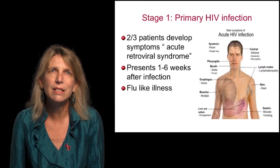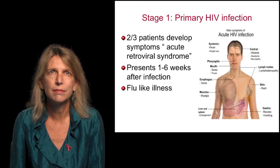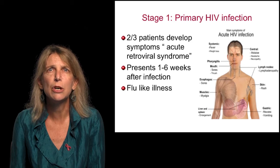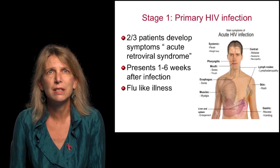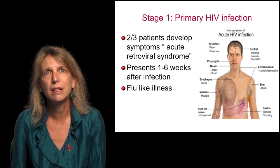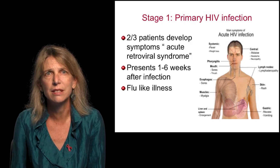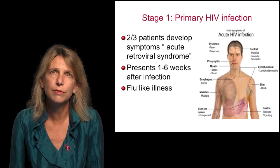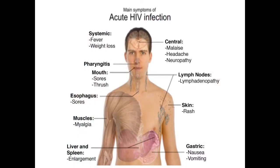We can think of HIV in terms of stages. The first stage of HIV we can call primary infection. After infection is established with HIV, two-thirds of patients develop symptoms called the acute retroviral syndrome. These typically present one to six weeks after infection, and overall are characterized as a flu-like illness. They can affect all parts of the body, producing systemic symptoms such as fever and weight loss. They can affect the central nervous system, causing difficulty in concentration and aseptic meningitis.